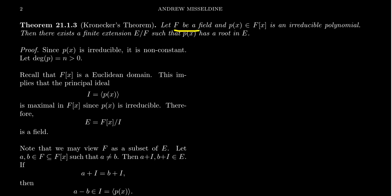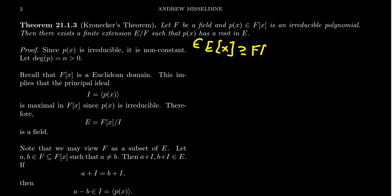Kronecker's theorem tells us that if we have any field F and any irreducible polynomial p(x) in the polynomial ring F[x], then there exists a finite extension E over F such that p(x), when viewed as a polynomial in E[x], has a root. So in general terms, Kronecker's theorem tells us that every irreducible polynomial has a root in some finite extension of the field.